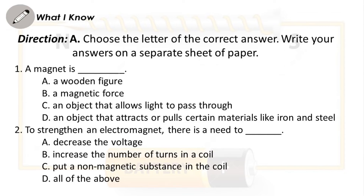Direction A. Choose the letter of the correct answer. Write your answers on a separate sheet of paper. Question 1: A magnet is blank. A. A wooden figure. B. A magnetic force. C. An object that allows light to pass through. D. An object that attracts or pulls certain materials like iron and steel.